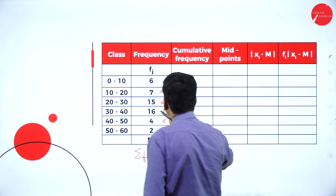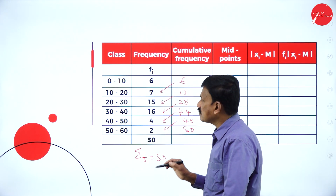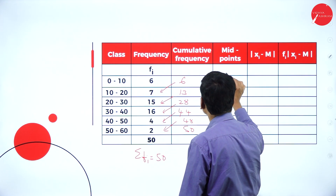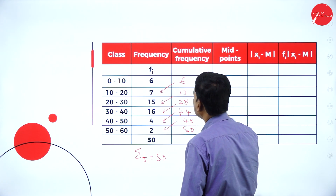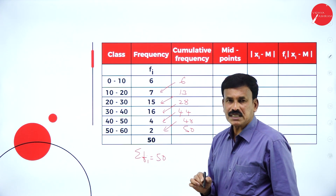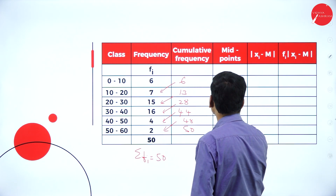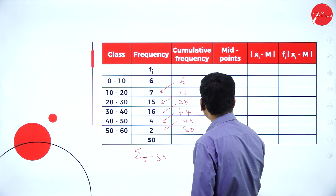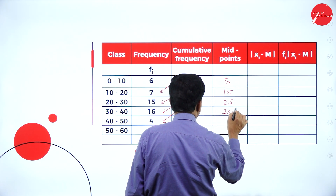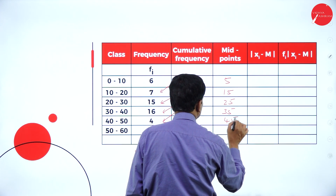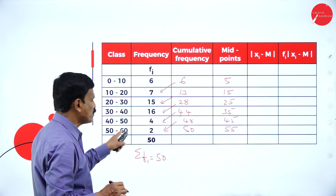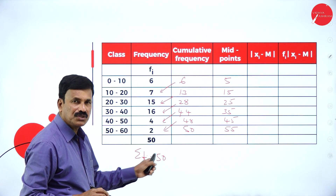Now find out the midpoint of the class interval, that is called Xi. 0 plus 10 divided by 2 equals 10 by 2, which is equal to 5. Then 10 plus 20 is 30 divided by 2 is 15. It is a difference of 10 each time: 15, 25, 35, 45. And 50 plus 60 gives 110 divided by 2 is 55. This is how we find the midpoint.